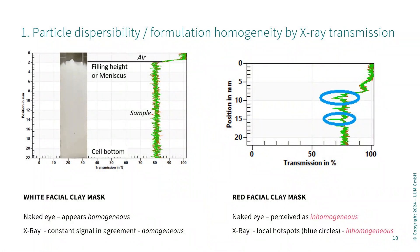Where the X-ray transmission is much smaller than in the neighboring regions, we have a particularly high concentration of ingredients interacting with X-ray. The sample appears homogeneous by naked eye, but we can obtain this information through instrumental detection by X-ray.